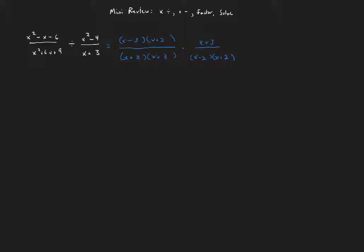Now comes the canceling part. Anything in the numerator can cancel with anything in any of the denominators. I see an x plus 2 here and an x plus 2 there. There's an x plus 3 here that can cancel one of the x plus 3s, and I don't think anything else cancels. At the end of the day we're going to get an x minus 3 in the numerator and an x plus 3 times x minus 2 in the denominator.